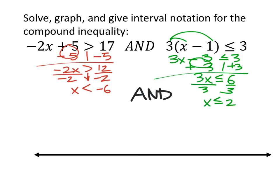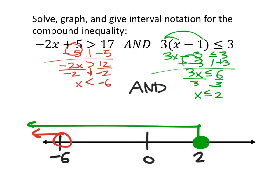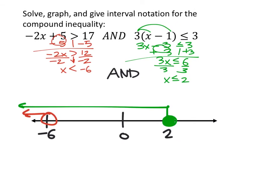I'll do the graph first. In red, negative six is to the left of zero and two is to the right. Negative six gets an open circle because it's not equal, and it goes to the left. x ≤ 2 gets a closed circle and also goes to the left. I need to re-graph this more accurately to show where the intersection is.